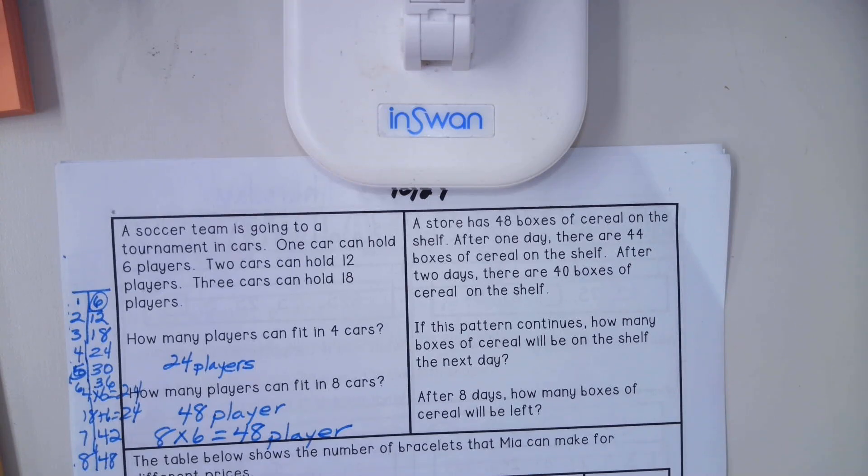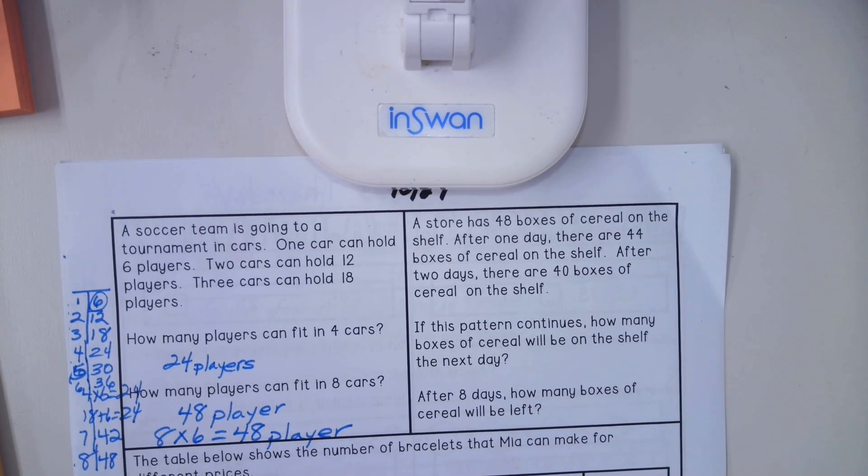Our table shows us the cost of two bracelets and the cost of three bracelets. Think about how can we use that information to find out the cost of one bracelet. So if three bracelets cost seven dollars and fifty cents, and two bracelets cost five dollars, I can subtract those and find out that the cost of one bracelet is two dollars and fifty cents.